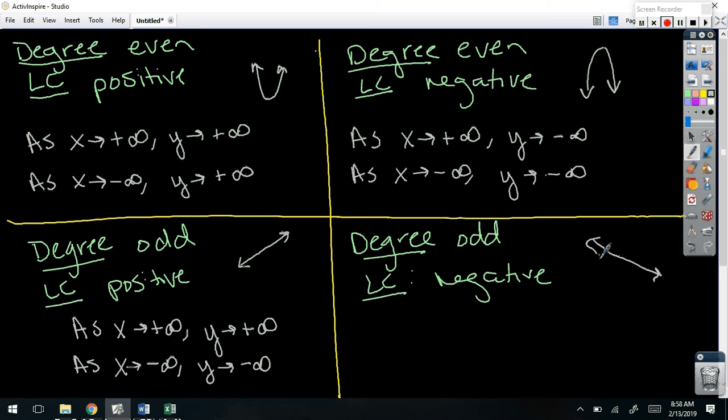Easiest odd degree you can think of? A linear. Linear with a positive leading coefficient would be a linear with a positive slope. One's the smallest odd number I could think of, and a degree of one's a linear. It's pretty easy looking. Right side, what's it do? As X approaches positive infinity, Y approaches positive infinity. Left? As X approaches negative infinity, Y approaches negative infinity. It doesn't matter which one you do first. That's just habit for me. I always do positive first.